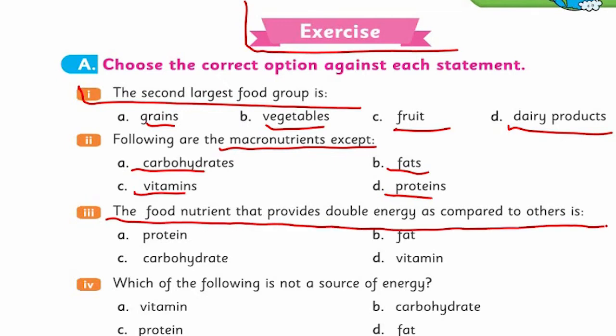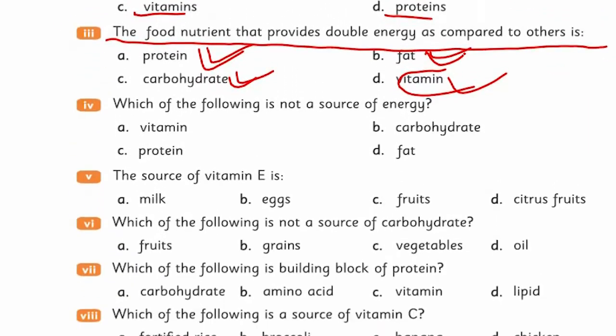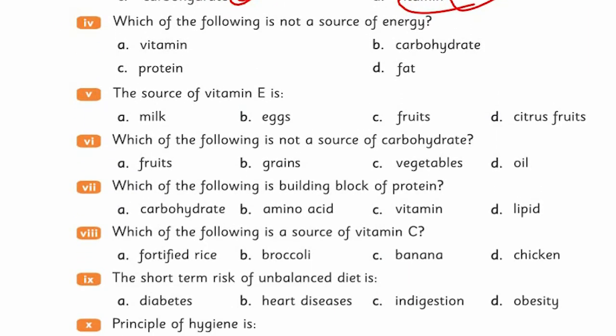The food nutrient that provides double energy - protein, carbohydrates, vitamins, fats. Among these, one gives double energy. Remove vitamin from energy sources. Protein gives energy, carbohydrate gives energy, but fat gives more. Encircle the correct answer.